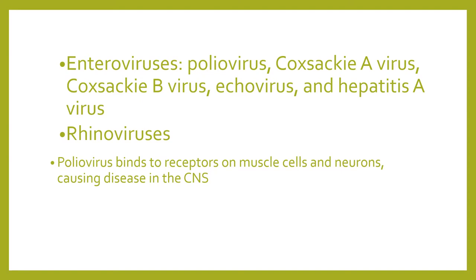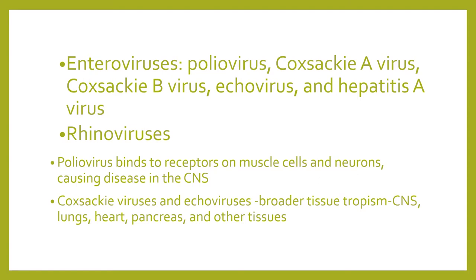The poliovirus binds to receptors on muscle cells and neurons, causing disease in the central nervous system. Your coxsackieviruses and echoviruses have a broader tissue tropism, meaning they affect not only the CNS but also the lungs, the heart, the pancreas, and other organs. That is how we compare your coxsackievirus from your poliovirus.